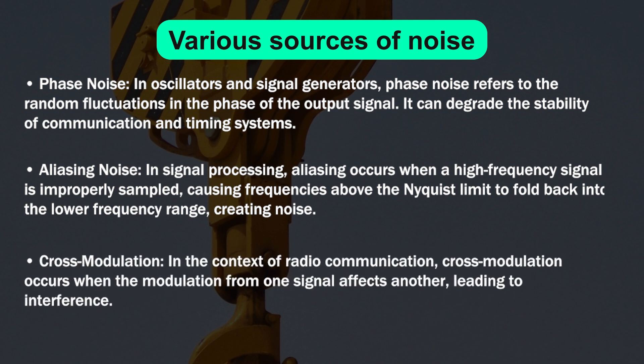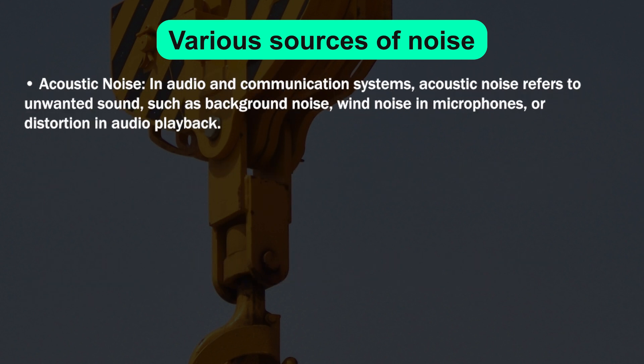In the context of radio communication, cross modulation occurs when the modulation from one signal affects another, leading to interference. The next point is acoustic noise. In audio and communication systems, acoustic noise refers to unwanted sound such as background noise, wind noise in microphones, or distortion in audio playback.